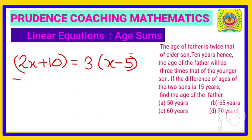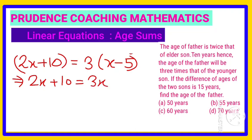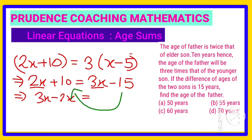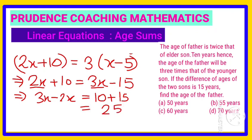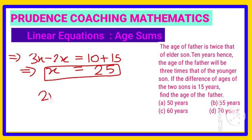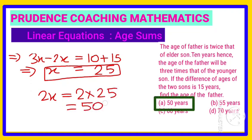Expanding: 2x plus 10 equals 3x minus 15. Rearranging: 3x minus 2x equals 10 plus 15, so x equals 25. Since the father's age is 2x, the age of the father is 2 into 25, which is 50 years old.